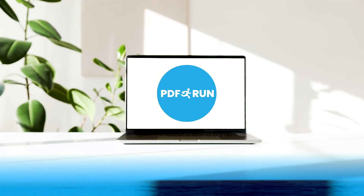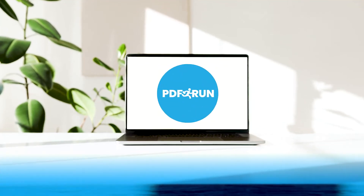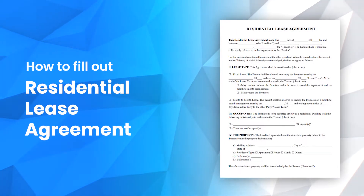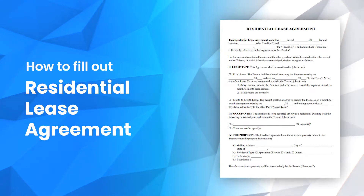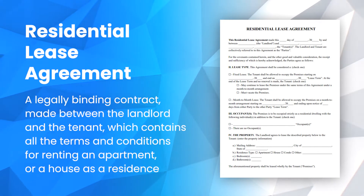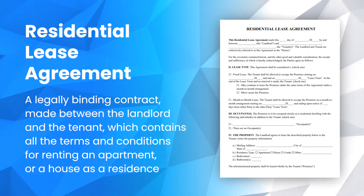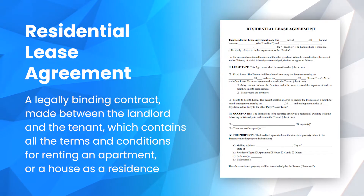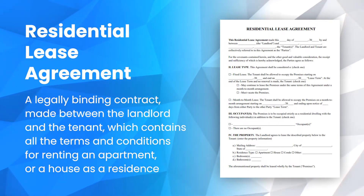Welcome to PDF Run. In this video, we'll guide you on how to fill out a Residential Lease Agreement. A Residential Lease Agreement is a legally binding contract made between the landlord and the tenant, which contains all the terms and conditions for renting an apartment or a house as a residence.